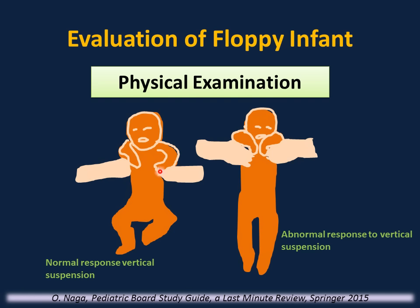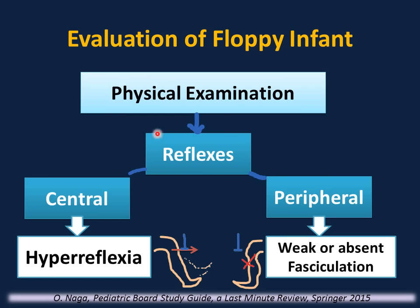Compare that to the normal infant — the shoulders are stable with resistance above your hand, and the legs are in flexion with continuous movement. Another important step is to perform reflexes in all infants with hypotonia. In central causes, reflexes are normal or exaggerated — hyperreflexia. In peripheral causes, reflexes are weak or absent. In special cases like anterior horn cell destruction, you will see fasciculations or spontaneous muscle contraction, best seen in the tongue.